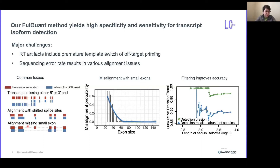In particular, we noticed that the alignment rate drops quickly when exons are small in size. Exons shorter than 60 bp are often not properly aligned. Therefore, we developed an algorithm that tackles these issues and effectively removes false positive transcripts, achieving an overall identification accuracy of 98%.